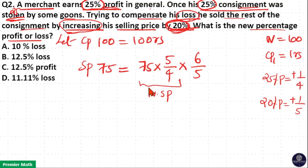Now this is the new SP, new selling price. Now 5 and 5 cancel. 2 goes 2 times in 4, 2 goes 3 times in 6. So 75 into 3 is 225. 225 by 2 is equal to 112.5 rupees.